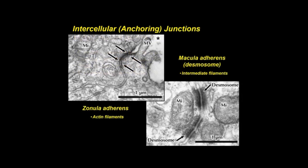Two kinds of anchoring junctions—the zonula adherens and macula adherens, also known as a desmosome—hold cells together. Actin filaments typically anchor the zonula adherens, whereas intermediate filaments anchor desmosomes. Resembling spot welds, desmosomes are complex junctions that link epithelial, cardiac, and smooth muscle cells. Dense plaques are on the cytoplasmic sides of opposing membranes, and the intracellular space often shows a central dense line rich in the protein cadherin.